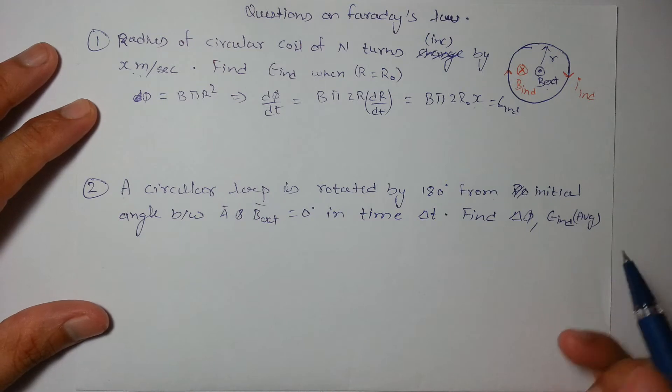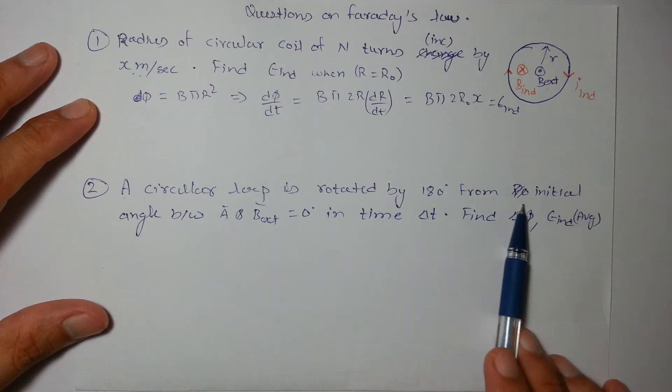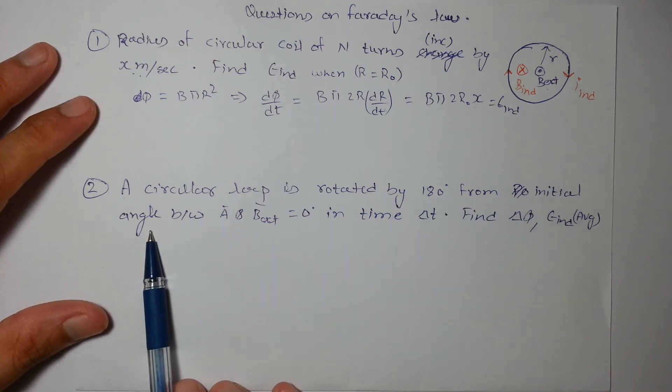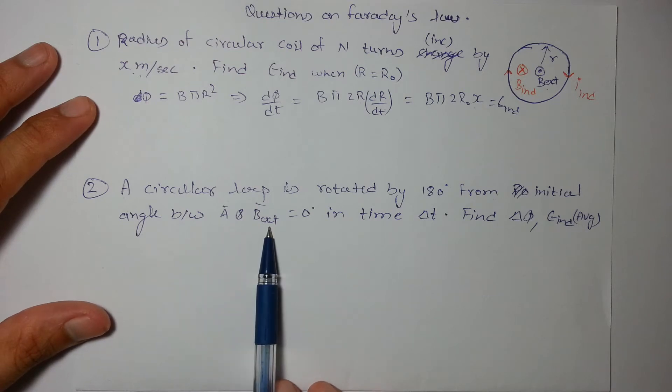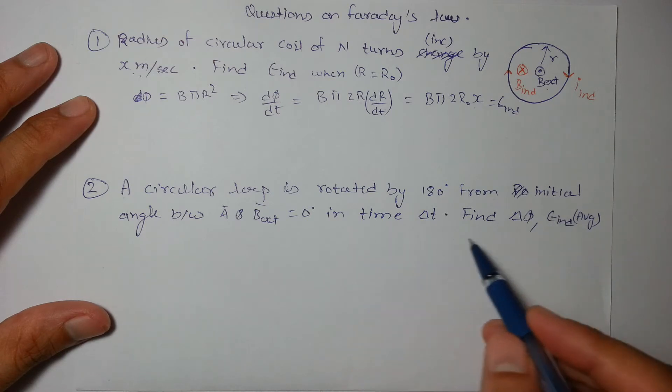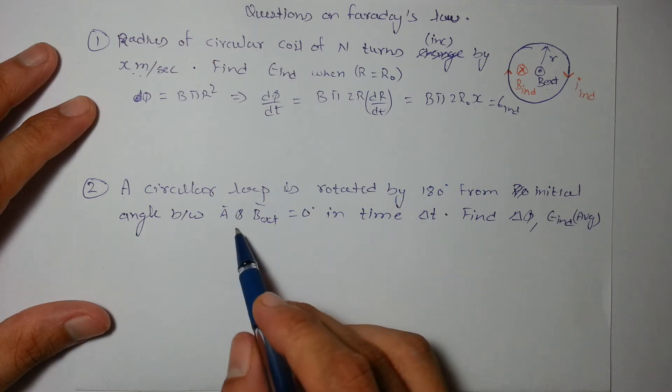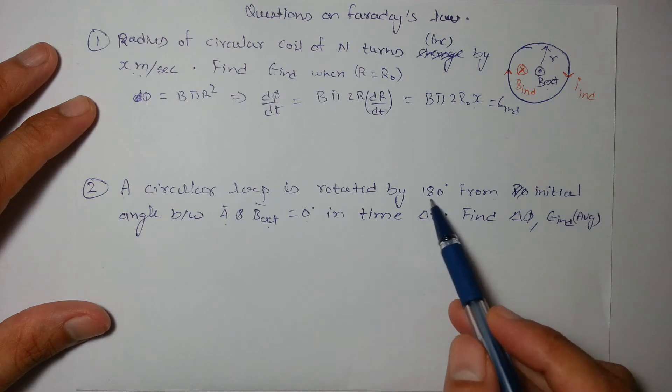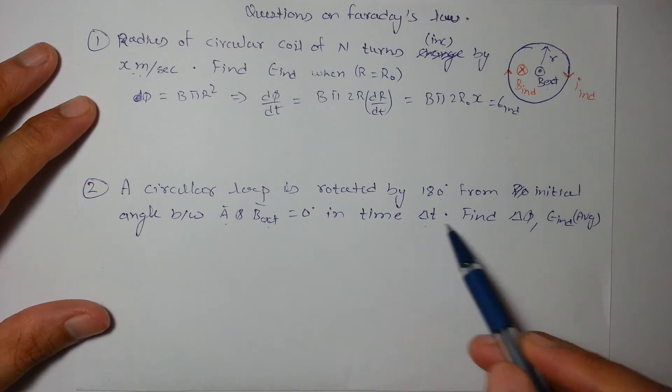Moving on to the next question, a circular loop is rotated by 180 degree from its initial angle between A and B. External is 0 in time delta t. So in the question it is given that the initial angle between B and A is 0 and it is rotated by 180 degree in time delta t.